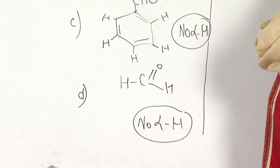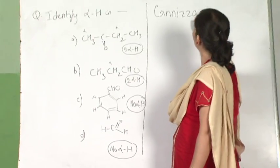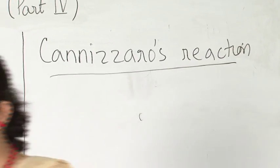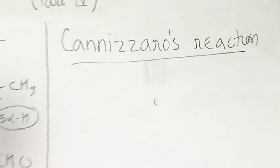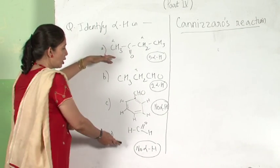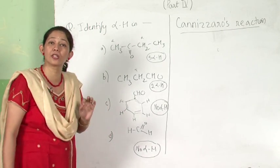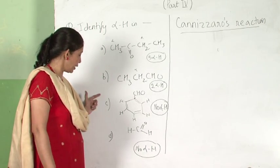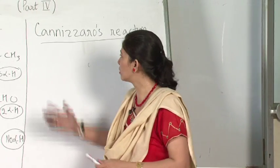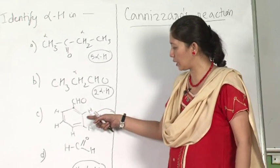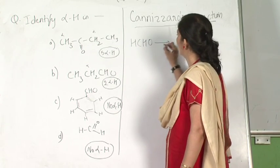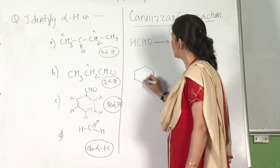Now I come to a next naming reaction called the Cannizzaro reaction. Cannizzaro reaction is only meant for aldehydes, not for ketones. And specifically, only those aldehydes which do not have alpha hydrogen. Among the aldehydes listed, only compounds C and D can give the Cannizzaro reaction. A short note on Cannizzaro's reaction is a very important examination question.